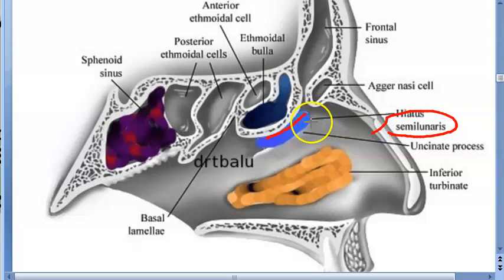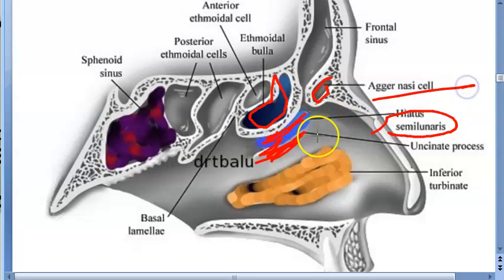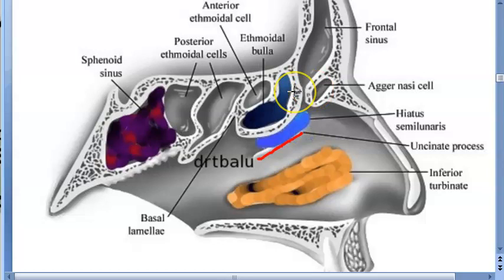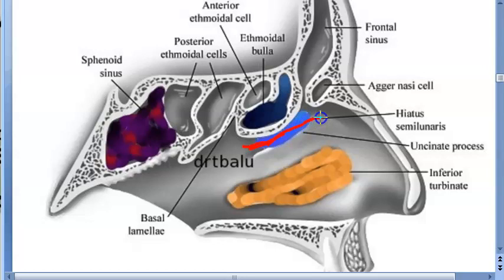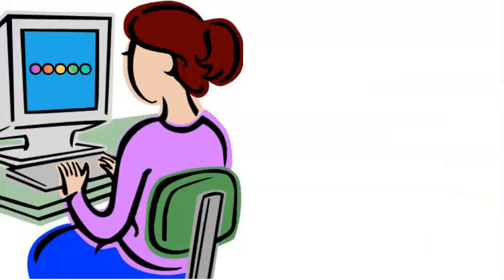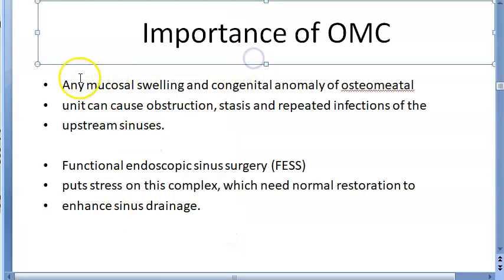Let us look at one more photo showing the hiatus semilunaris. Here you can see the uncinate process, the ethmoidal bulla, and the agger nasi cell also shown. Four structures: uncinate process, middle turbinate, bulla ethmoidalis, and agger nasi. Four spaces: maxillary ostium, ethmoidal infundibulum, hiatus semilunaris, and middle meatus. Only the anterior ethmoid drains here, not the posterior ethmoid, and the sphenoid sinus also does not drain here.